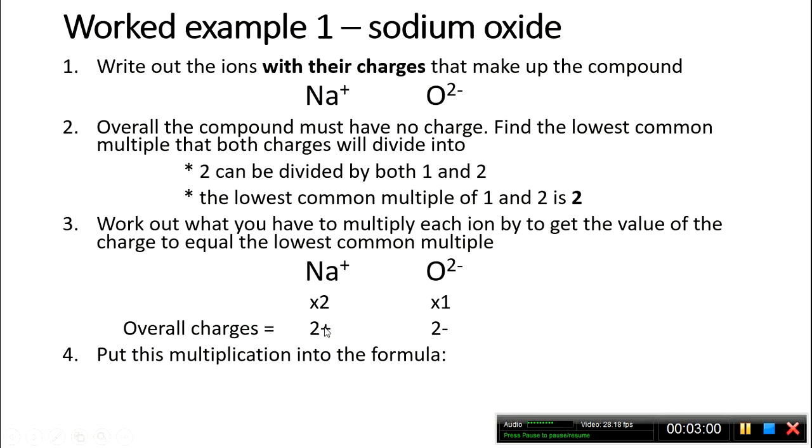This one is already 2, so we multiply it by 1. This means our overall charge for two sodiums would be 2+, and for one oxide is 2-. We now put this multiplication into the formula. The 2 in Na2O means we need two sodiums to cancel out the 2- charge on the oxide ion.